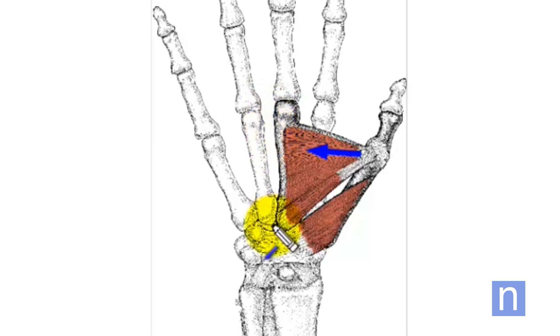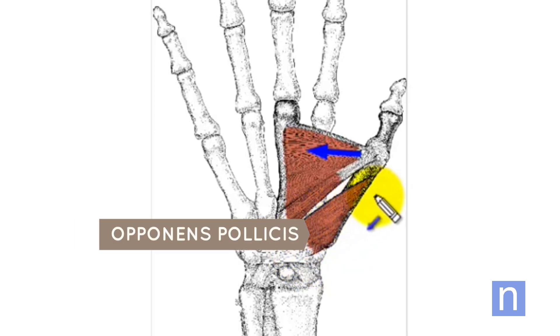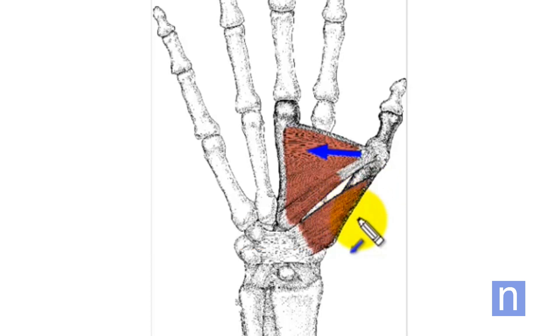The second muscle is the really fascinating muscle of the thumb, and this is called the opponens pollicis. Now this is Latin - opponens means bringing something in contact with something else, as an opponent is someone that you're against, you're opposing.